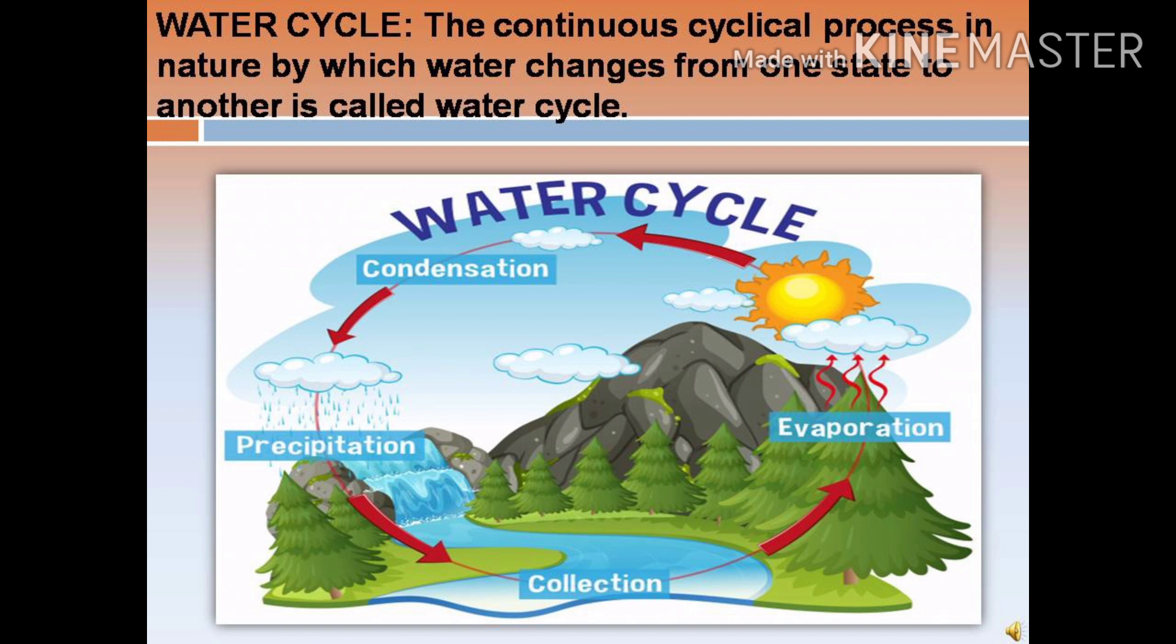As the water vapour rises up in the air, it starts cooling and forms tiny water droplets. These water droplets come together and form clouds. This process is called condensation.